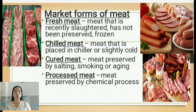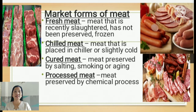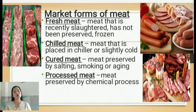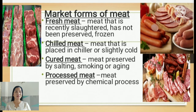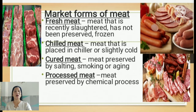The third market form is cured meat — meat preserved by salting, smoking, or aging. The fourth is processed meat — meat preserved by chemical processes. The difference: cured meat is preserved by salting, smoking, or aging, while processed meat is preserved by chemical processes. Longganisa can be a combination of both cured and processed. Examples of processed and cured meats commonly eaten at breakfast include ham, bacon, bologna, and ground beef.